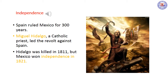Independence. Spain ruled Mexico for almost 300 years before the people of Mexico demanded independence. The revolt against Spanish rule was led by a Catholic priest named Miguel Hidalgo. In 1810, he gave a famous speech calling for the common people to rise up against the Spanish. Hidalgo was killed in 1811, but fighting continued until Mexico won its independence in 1821.